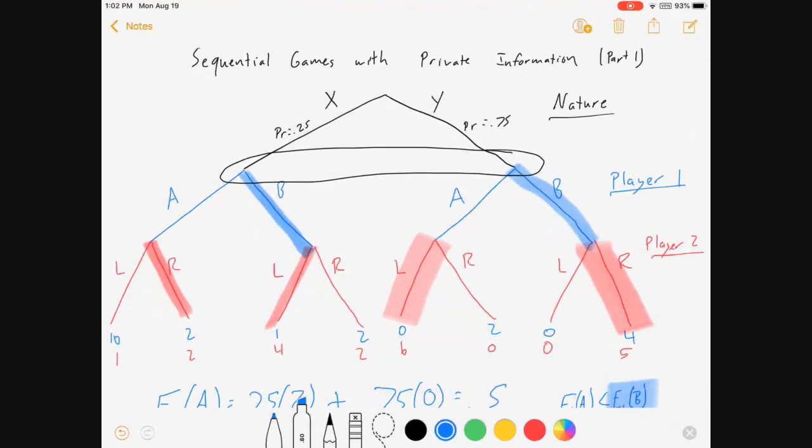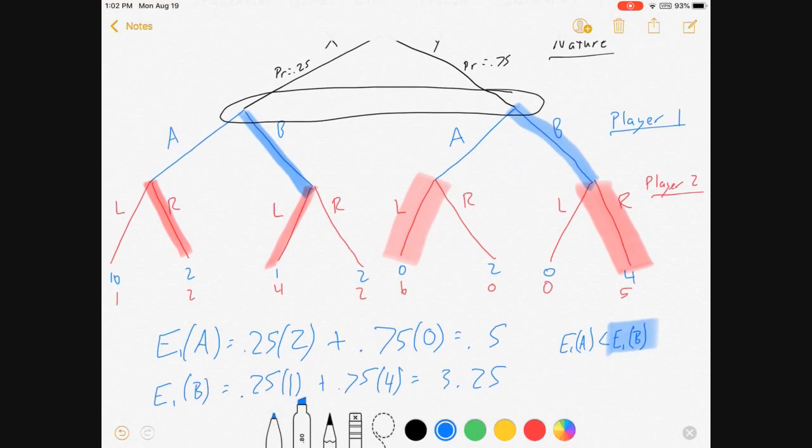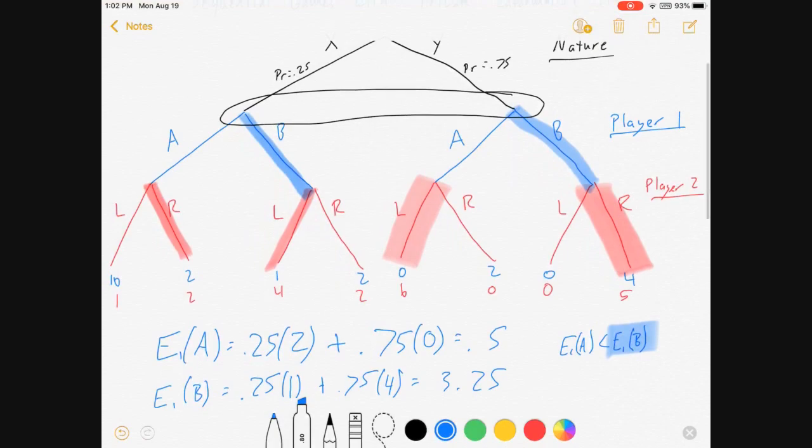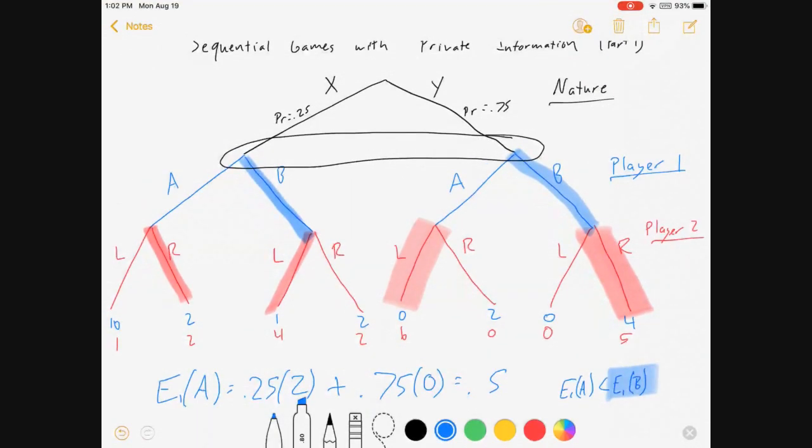And so a Bayesian Nash equilibrium is one where player one in this case is choosing B, and player two is responding by either playing left if they're on the X side of the tree, or playing R if they're on the right side of the tree.